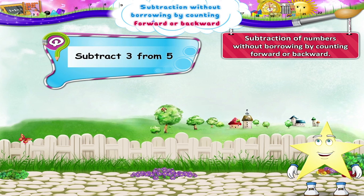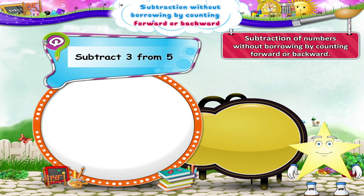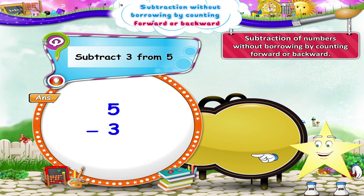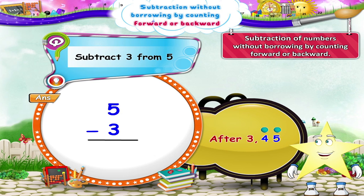See Starry? Let's subtract 3 from 5. Let's solve this example by counting forward. We shall draw one dot for every number after 3, till we reach the number 5. Here: 4, 5. Now let's count the number of dots. There are two dots. So Starry, 5 minus 3 equals 2.